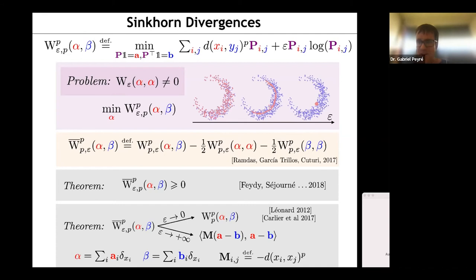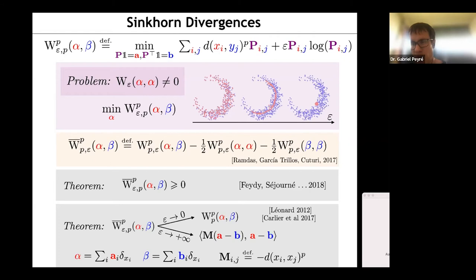Regarding connections to information theory: Sinkhorn appears naturally in message-passing algorithms on graphs, and Viterbi decoding on channels is connected to Sinkhorn when entropy is added. There is definitely a true connection between Sinkhorn and many aspects of information theory and graphical models in general.